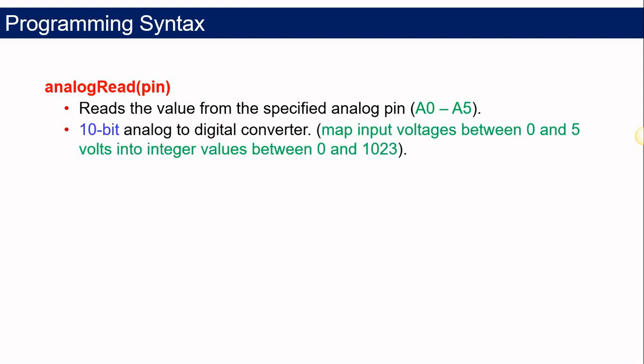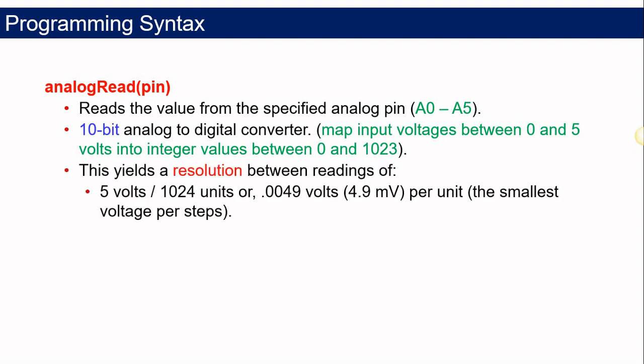The ADC will map the input voltages, which you have chosen for your voltage reference, either between 0 and 5 or 0 to 3.3 volts, into the digital values. If you are using 5 volts as your ADC voltage reference, the resolution between these readings is 5 volts divided by 1024 units, or 0.0049 volts or 4.9 millivolts per unit, which is the smallest voltage per step in that ADC.